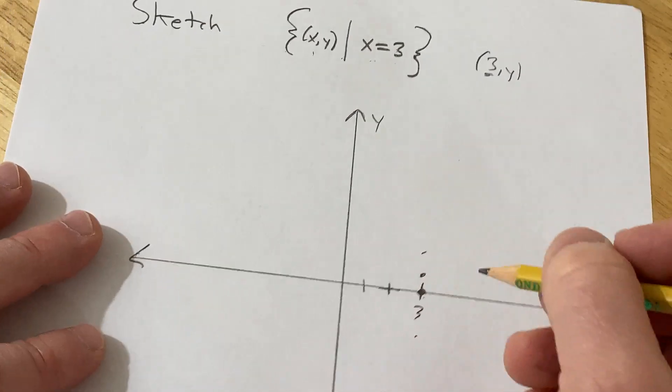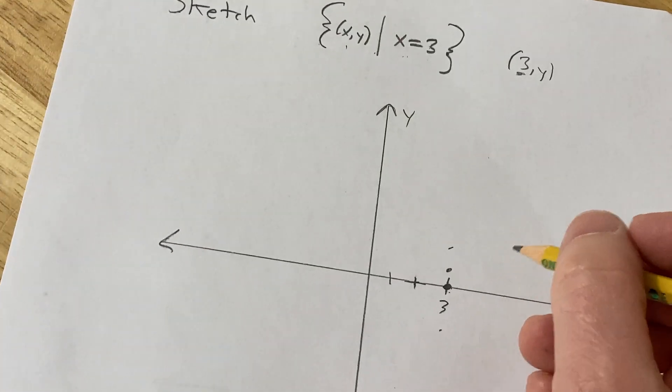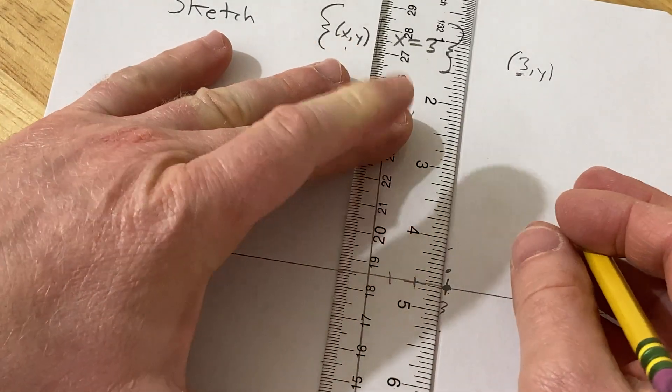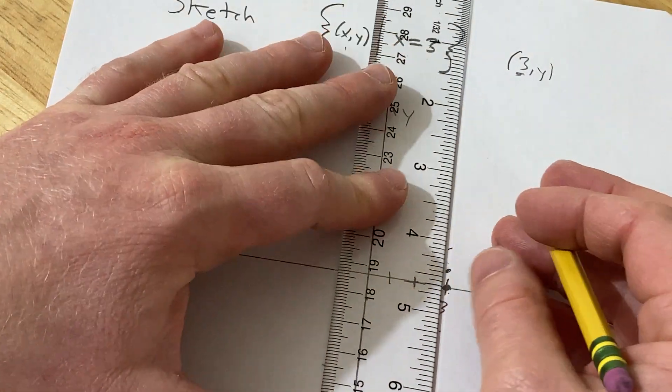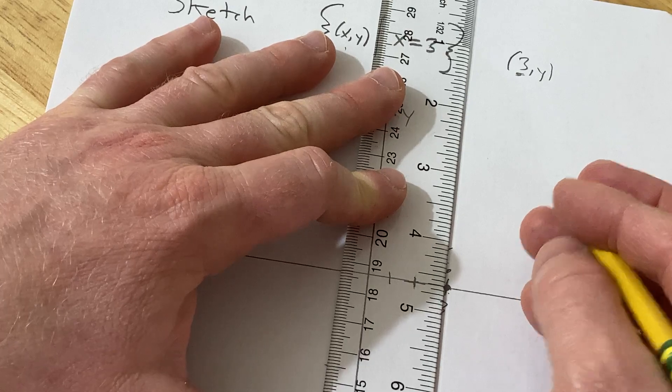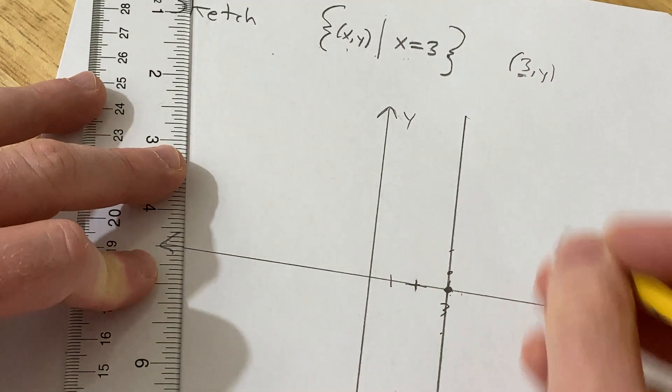Basically every single ordered pair where the x-coordinate is 3 is in this set. I'm going to take my trusty ruler and draw what I hope is a straight line. It's pretty good.